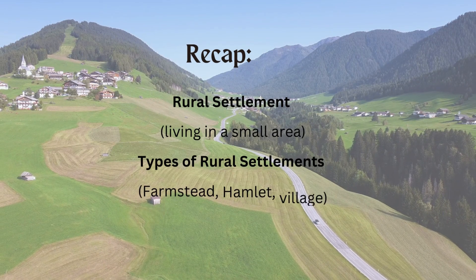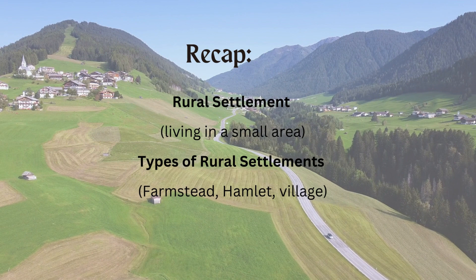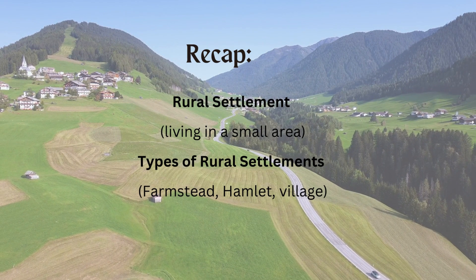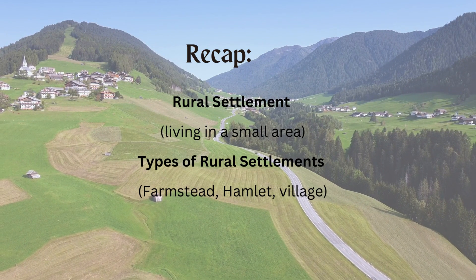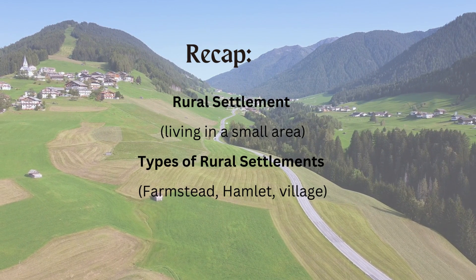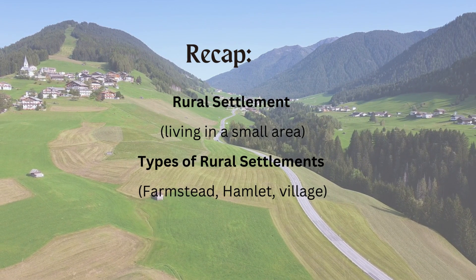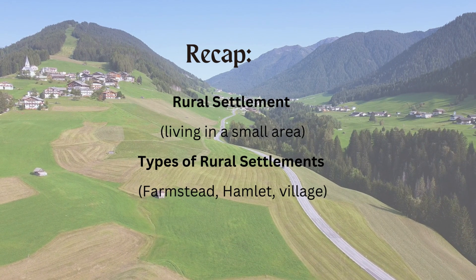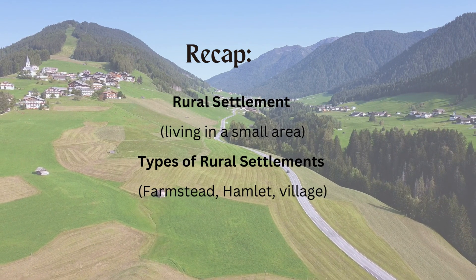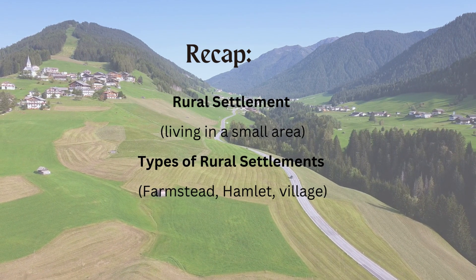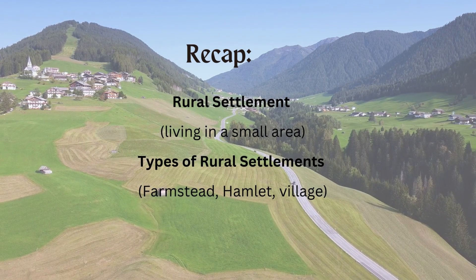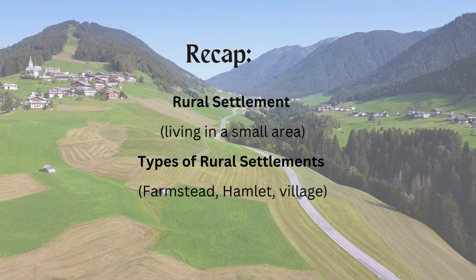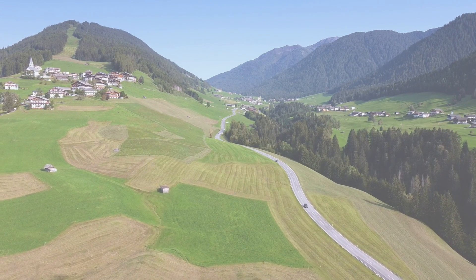Today we talked about rural settlements, which means living in a small area. Then we talked about types of rural settlements — there are three types: farmstead, hamlet, and village.